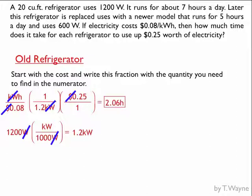When I do the math, I find that it's 2.06 hours. So the old refrigerator can run for about two hours before it uses up one-quarters worth of electricity at 8 cents a kilowatt hour.